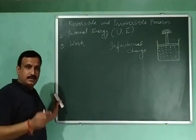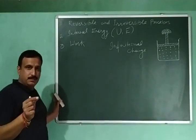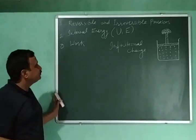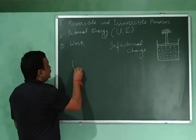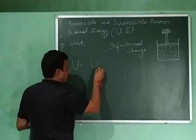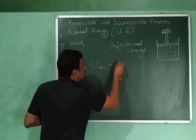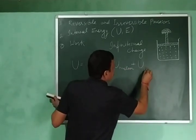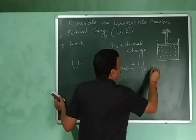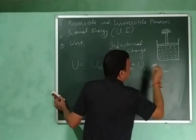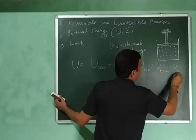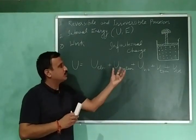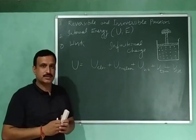Internal energy of a system or substance is the sum of different types of energies. It is the sum of electronic energy, nuclear energy, vibrational kinetic energy, translational kinetic energy, and rotational kinetic energy. So internal energy is the sum of all the different types of energies a substance can possess.